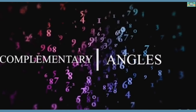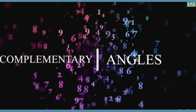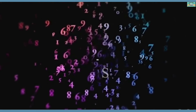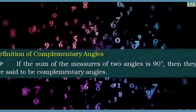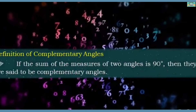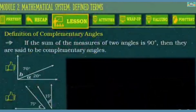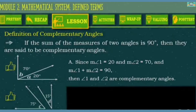Next is complementary angles. If the sum of the measures of two angles is 90 degrees, then they are said to be complementary angles. Since the measurement of angle 1 is equal to 20, and the measurement of angle 2 is equal to 70, and angle 1 plus angle 2 equals 90, then angle 1 and angle 2 are complementary angles.